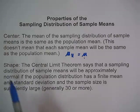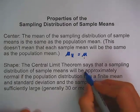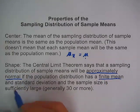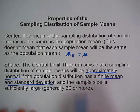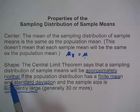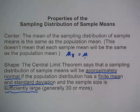For the shape, we use the central limit theorem. The central limit theorem states that the sampling distribution of sample means will be approximately normal if the population distribution has a finite mean and standard deviation, and the sample size is sufficiently large — generally 30 or more. As long as we have a finite mean, a finite standard deviation, and a sufficiently large sample size, we get an approximately normal sampling distribution of sample means. In our earlier example we didn't get a normal distribution because the sample size was only n=2, but with a larger sample size and finite mean and standard deviation, you will get an approximately normal distribution.